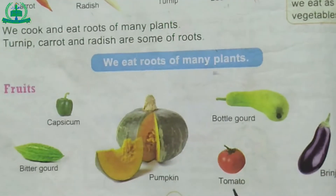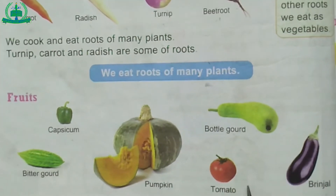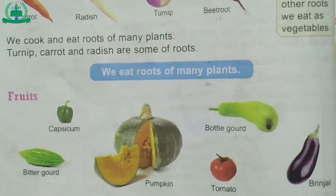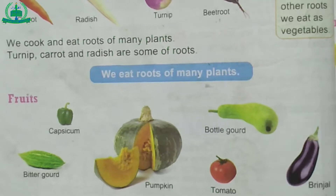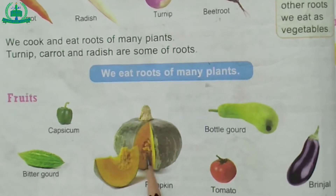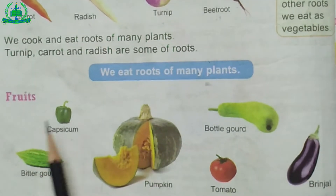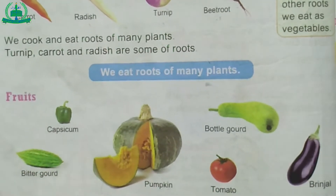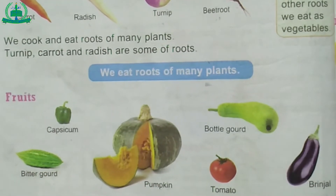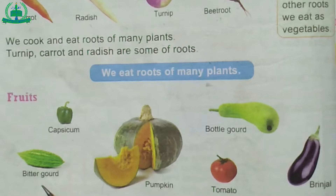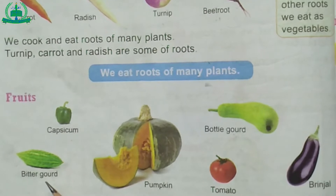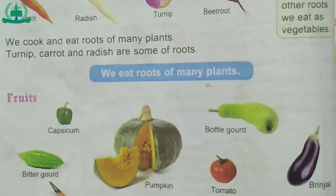Fruits: Tomato, ladyfinger, bitter gourd, pumpkin and capsicum are some examples of fruits that we use as vegetables.